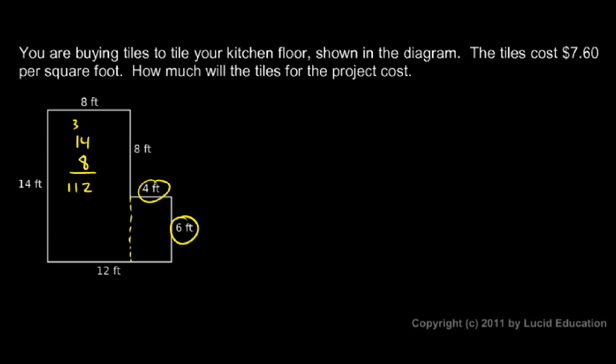And then this one's pretty easy. This 4 by 6 rectangle over here in my head. I know that that's 24 square feet. So the total area of the kitchen floor is 112 plus 24. And I can add those up. 136 square feet.